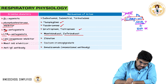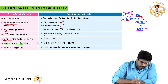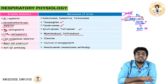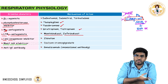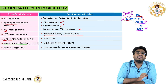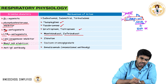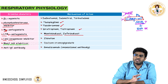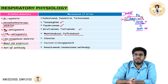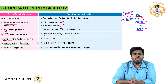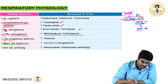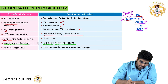Mast cell stabilizers are another option. In asthma, mast cells are activated, degranulate, and release histamine causing bronchoconstriction. Mast cell stabilizers prevent degranulation so histamine is not released, and bronchoconstriction does not occur. Sodium cromoglycate is a mast cell stabilizer.